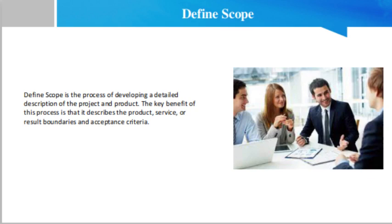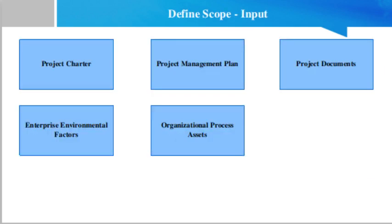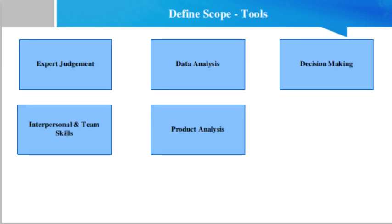We shall talk about the inputs for the Define Scope process. These include the project charter, project management plan, project documents, enterprise environmental factors, and organizational process assets. The tools and techniques for the Define Scope process include expert judgment, data analysis, decision making, interpersonal and team skills, and product analysis.